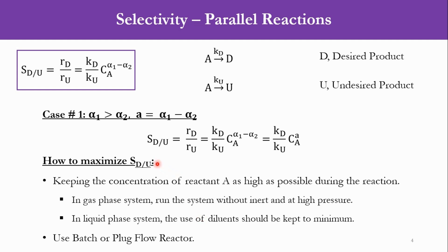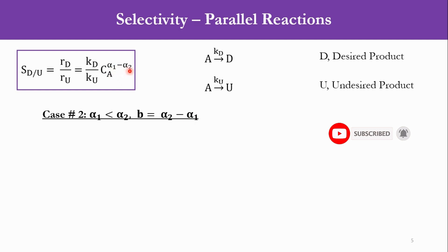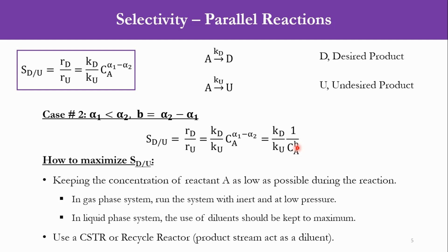Case 2 is obviously the opposite: alpha 1 is less than alpha 2. Let B equal alpha 2 minus alpha 1. Then S_D/U equals (K_D/K_U) times C_A raised to alpha 1 minus alpha 2, which equals (K_D/K_U) times (1/C_A^B). Here we have to keep the concentration of A as low as possible. In a gas phase system, we run the system with inert and at low pressure. In a liquid phase system, the use of diluent should be kept to a maximum so that concentration is minimized. We have to use a CSTR or recycle reactor.